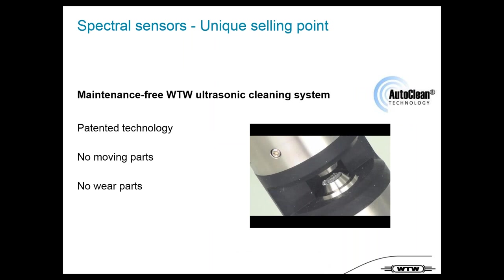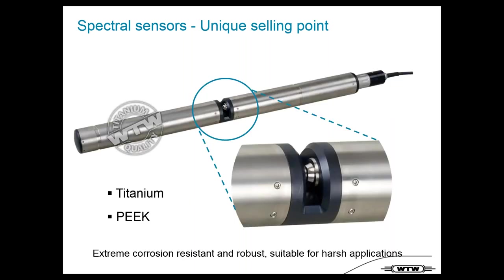One truly unique function for spectral sensors is integrated ultrasonic cleaning technology — no moving parts and no wear parts. Another key topic is the materials: all metal parts on the sensor are made of titanium, so no corrosion issues. The plastic parts are made of PEEK, an extremely robust industrial plastic material.